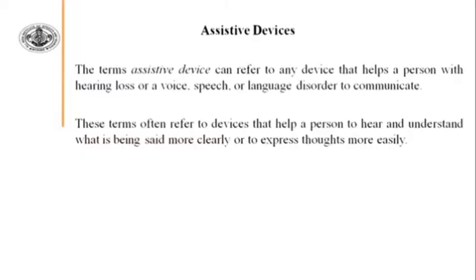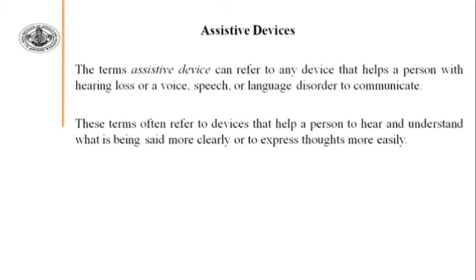These terms often refer to devices that help a person to hear and understand what is being said more clearly, or to express thoughts more easily. We know two terms: one is receiving and second is expressing. When we are listening, we are going through receiving, and when we are saying something, expression is going on. So Assistive Devices help a person to receive or understand something, and also help when expressing if there is a problem in speech.